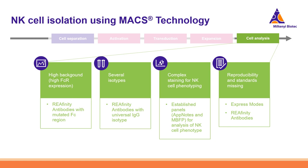To show how data from these kits can look: NK cells cultured alone versus NK cells co-cultured with target cells — you can nicely see that the NK cells co-cultured with target cells secreted TNF, GM-CSF, and interferon-gamma into the supernatant. To wrap up the NK cell analysis chapter: REAfinity antibodies with their mutated Fc region and universal IgG isotype make flow analysis easier and ensure reproducibility. There are also several application notes and biotech flow panels as protocols on our website to support NK cell phenotyping.